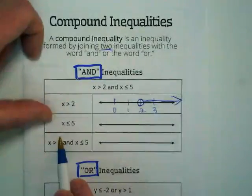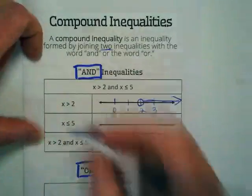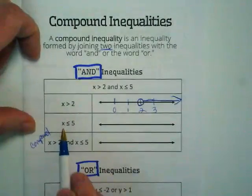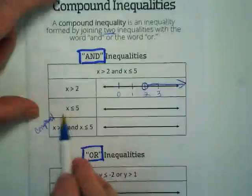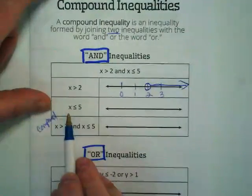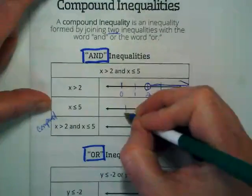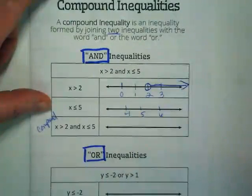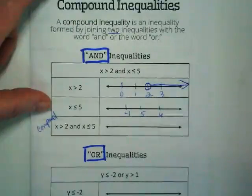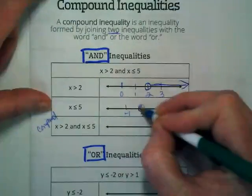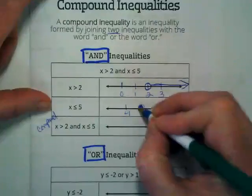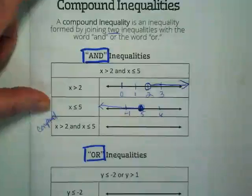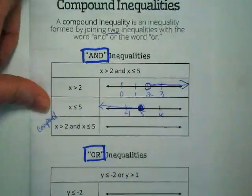Here's our second inequality. Right now they're standalones. It's down here where they become compound. So let's graph this. You guys have been doing this for a couple weeks now. x is less than or equal to 5. So I'm just going to graph 4, 5, 6. I'm circling the 5 and is it going to be filled in or empty? And the line is going to go to the left.